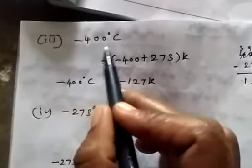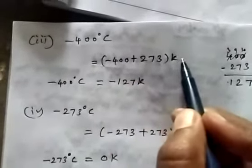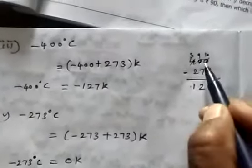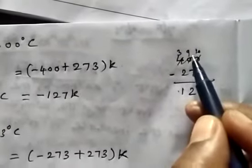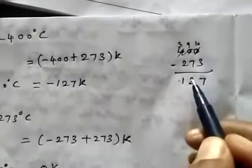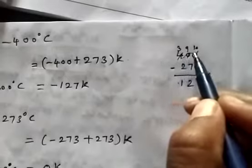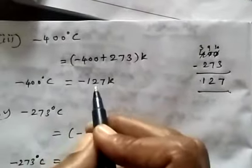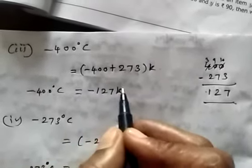Third: minus 400 degrees Celsius. So minus 400 plus 273 Kelvin. Subtracting: 400 minus 273 equals 127, and since 400 is larger, the result is minus 127 Kelvin.